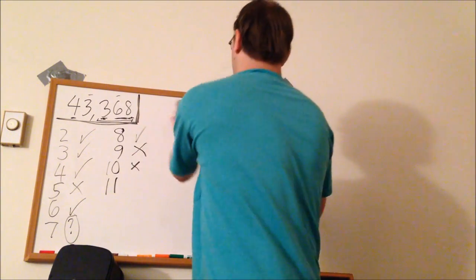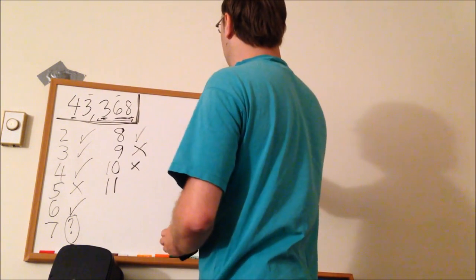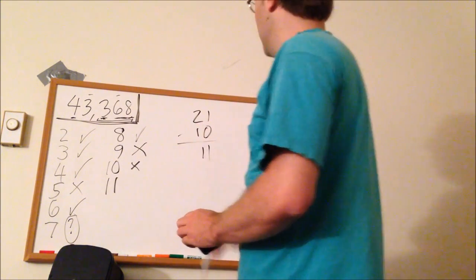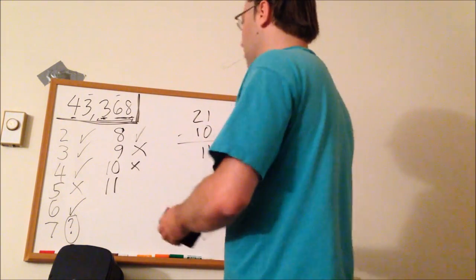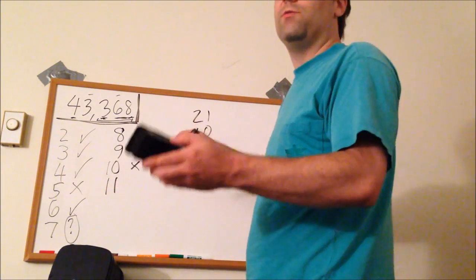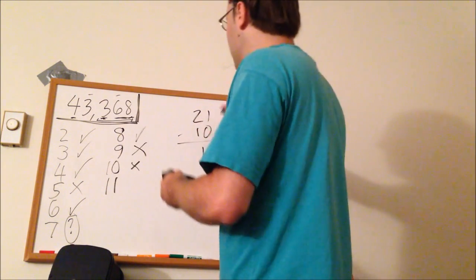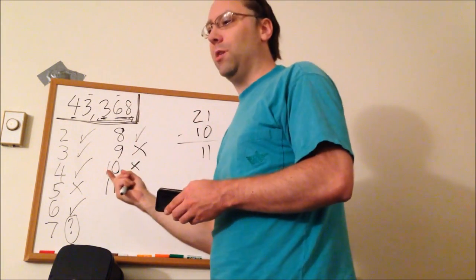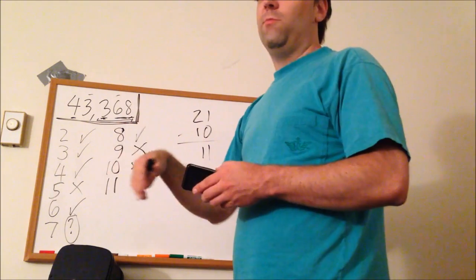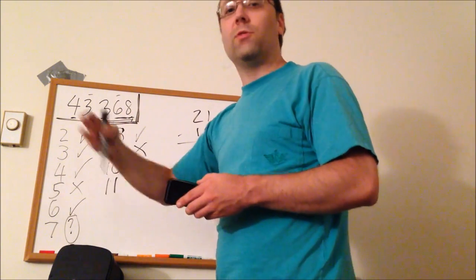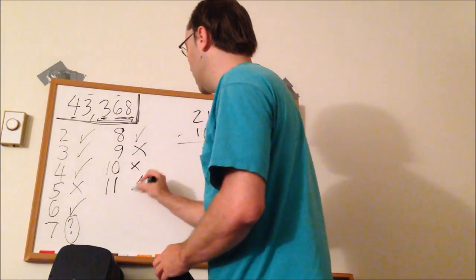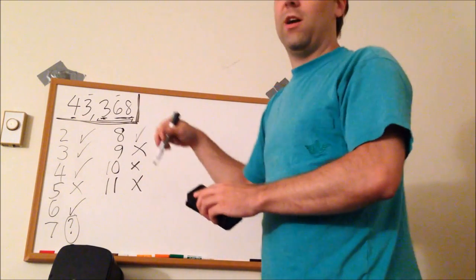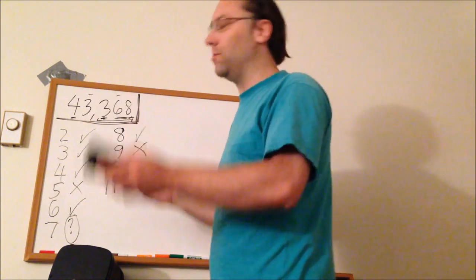However, you add the second and the fourth, the even numbered digits. The second digit and the fourth digit. 3 plus 6 is 9. If both sums are equal, then it's divisible by 11. Or if the difference is 11, or 22, or some multiple of 11, then it's divisible. But, 15 minus 9 is 6. So it's not divisible by 11.